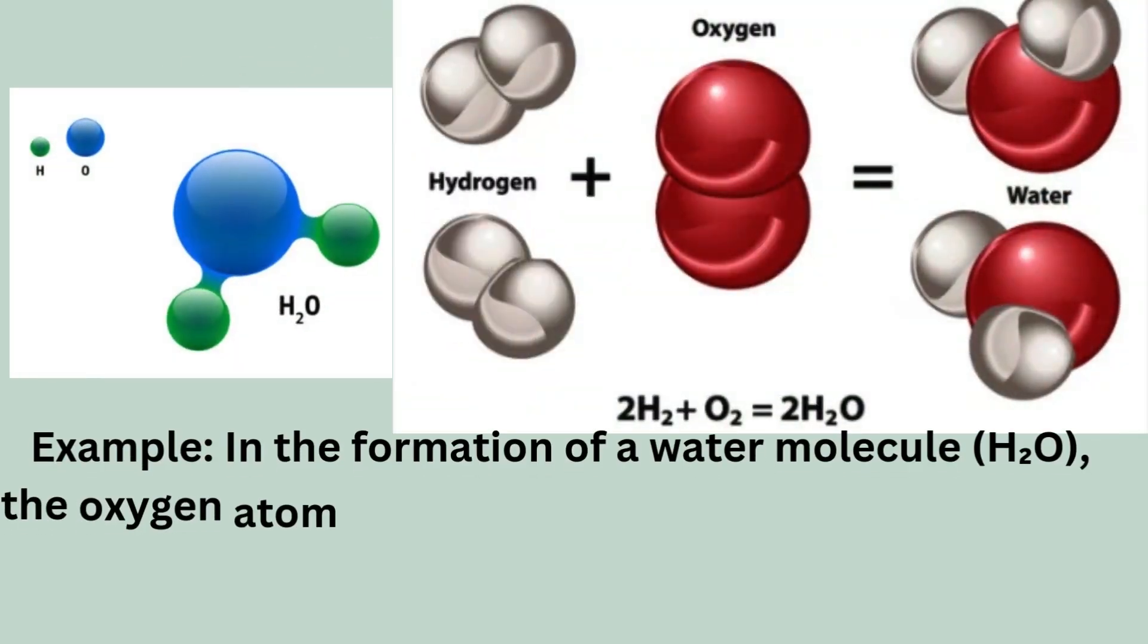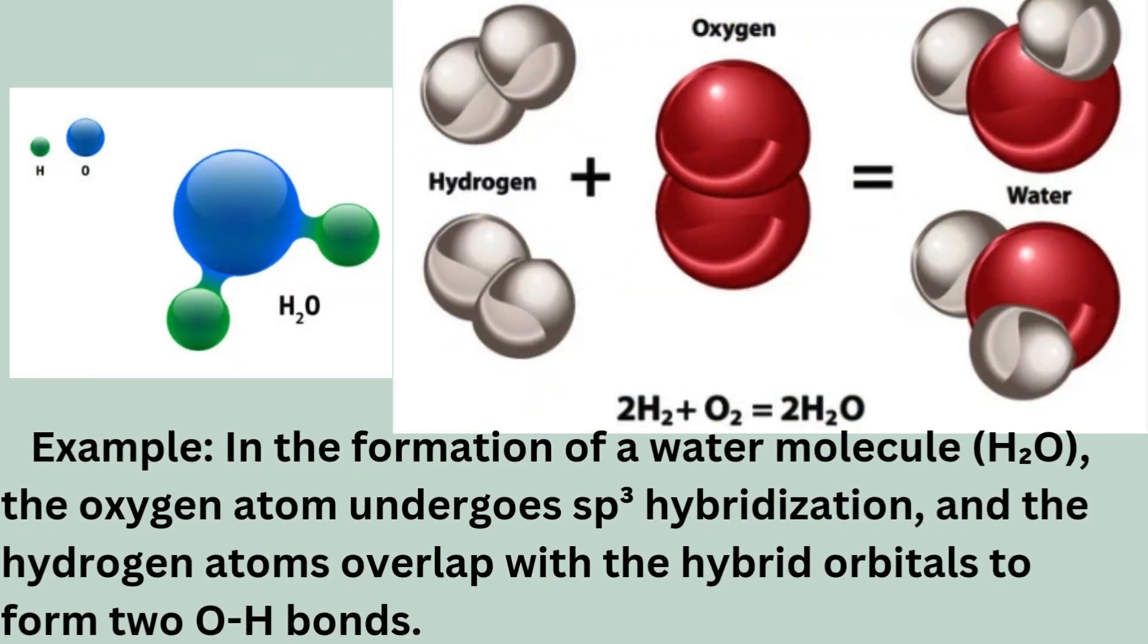Example: In the formation of a water molecule (H2O), the oxygen atom undergoes sp3 hybridization, and the hydrogen atoms overlap with the hybrid orbitals to form two OH bonds.